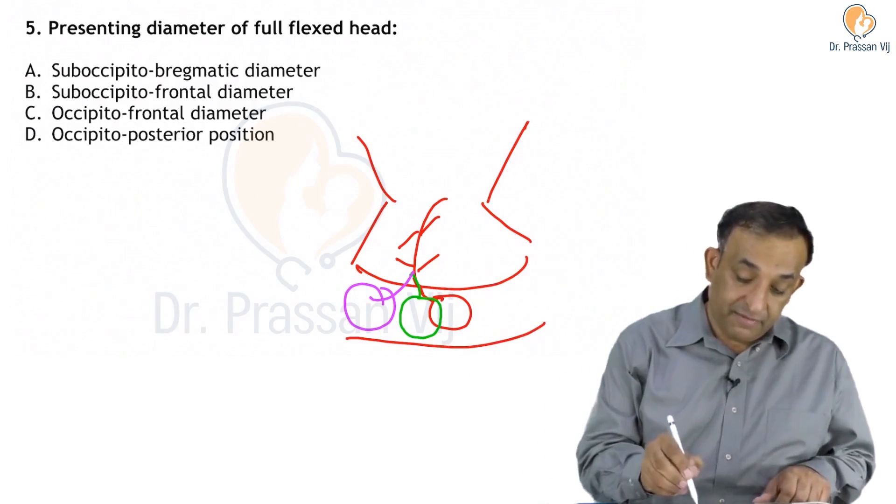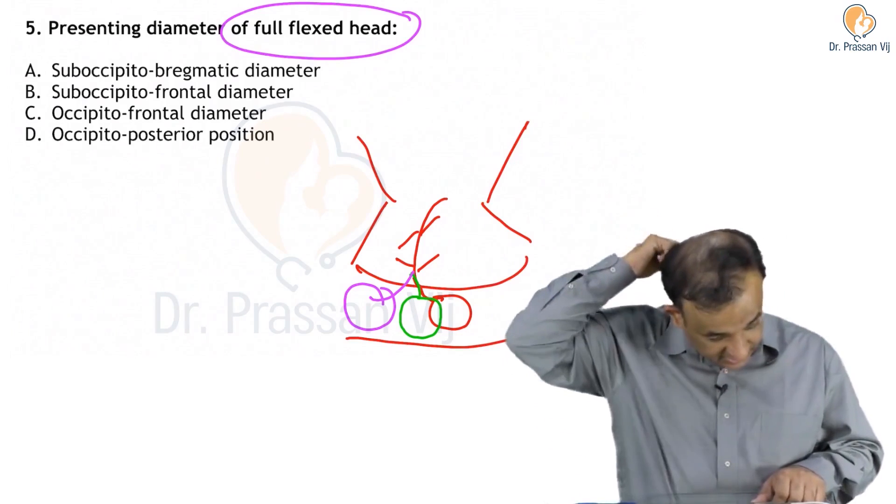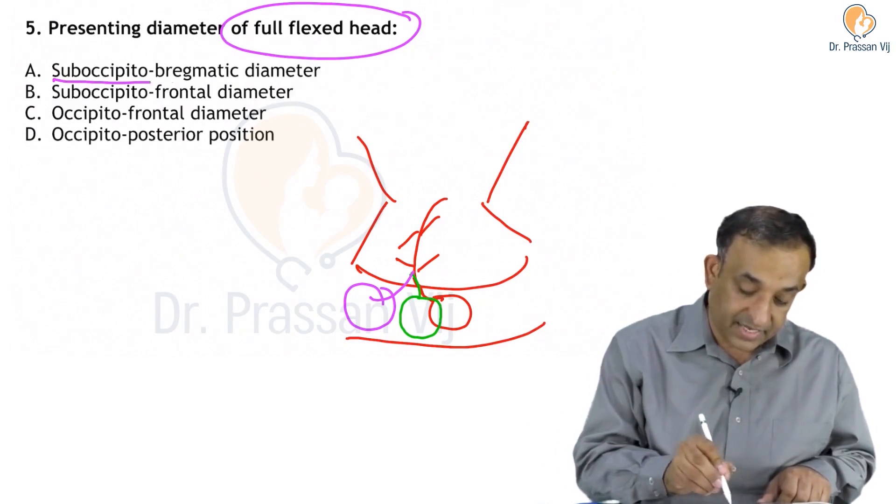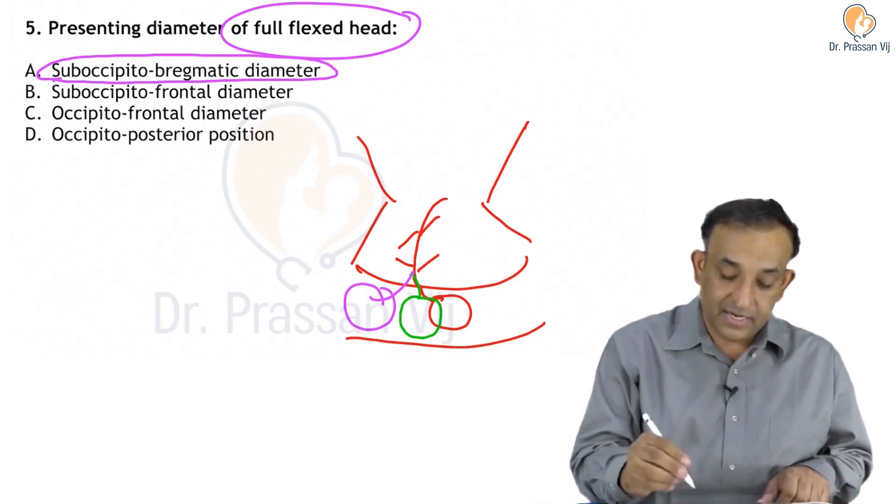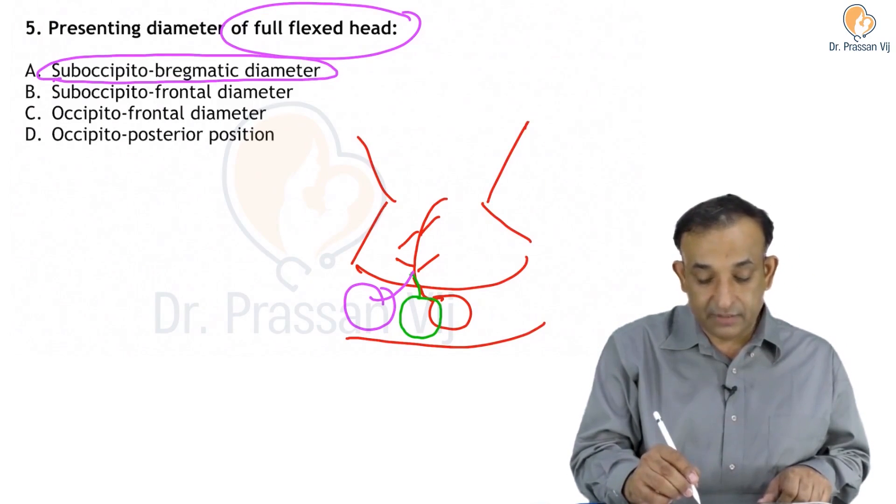When the head is fully flexed, the presenting diameter in a fully flexed head - all of us know it is the suboccipitobregmatic. Suboccipitobregmatic is the diameter of engagement in a case of fully flexed head in a vertex presenting part.